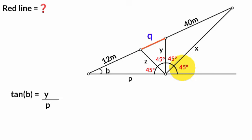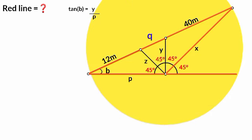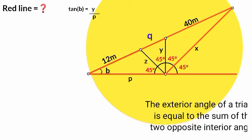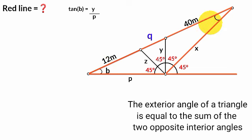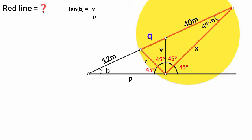Now if you look at this angle of 45 degrees, it is an exterior angle of this triangle. We know the exterior angle of a triangle is equal to the sum of the two opposite interior angles. That is, the sum of this angle and this must equal this 45 degrees. So since this is B, this must be 45 degrees minus B. From this triangle also, we can see this angle is also the sum of this and this, that is 90 degrees.